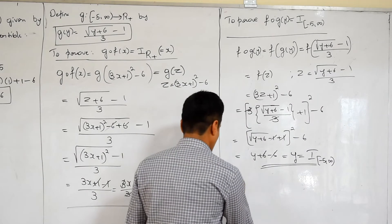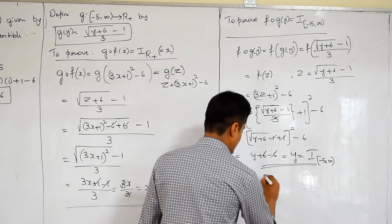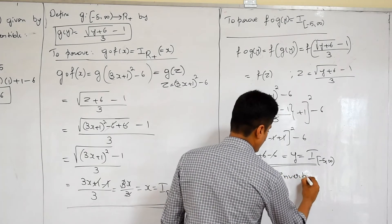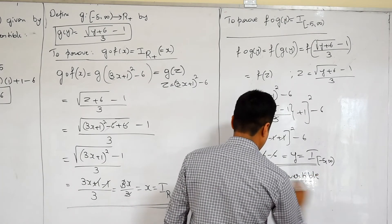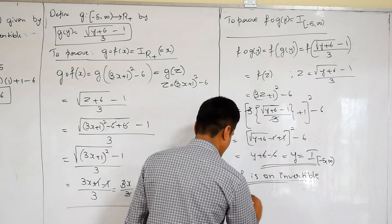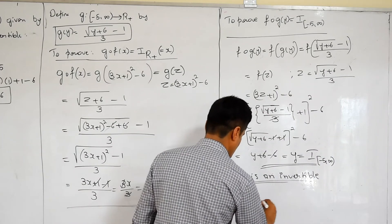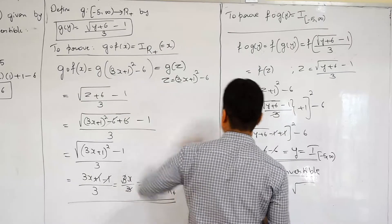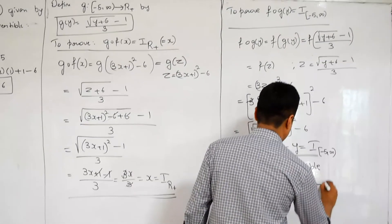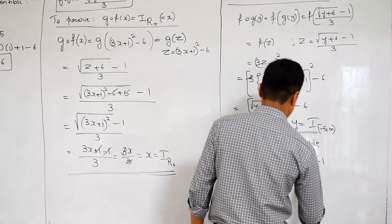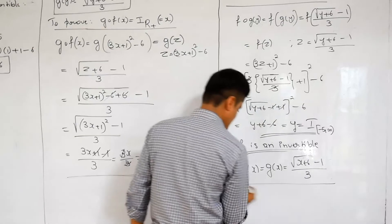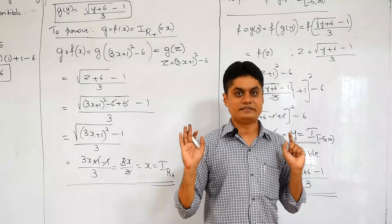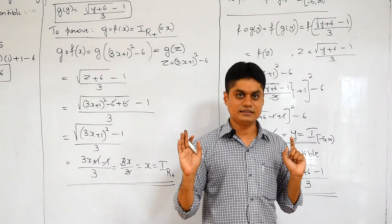Therefore f is an invertible function. f⁻¹(x) = g(x) = (√(x + 6) − 1)/3. This completes one more five-mark question. Please remember all three of these are very important questions for the final exam. Thank you.